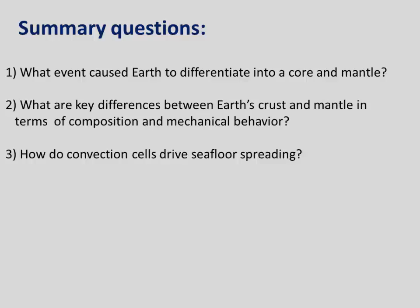To wrap up this video, here are three summary questions. First: what event caused Earth to differentiate into a core and mantle? That was the meltdown event from part one. Second: what are key differences between Earth's crust and mantle in terms of composition and mechanical behavior? That's from part two. Third: how do convection cells drive seafloor spreading? We covered that in part three. Thanks for listening, and see you in class.